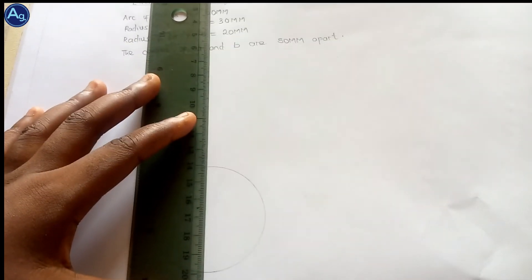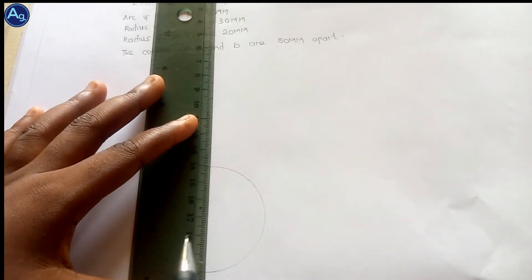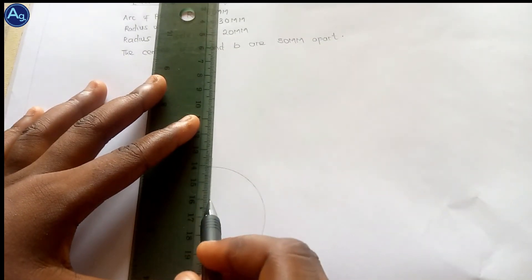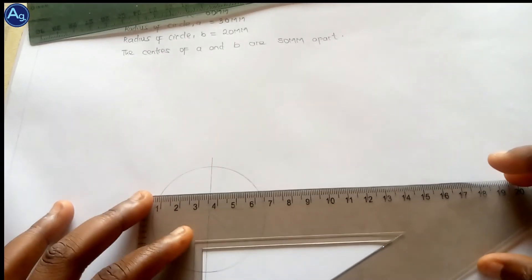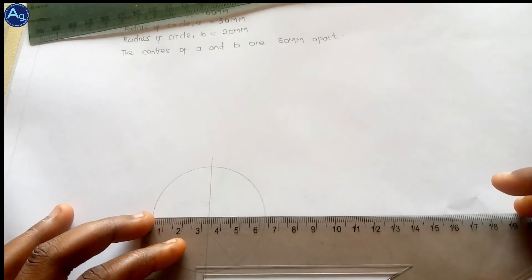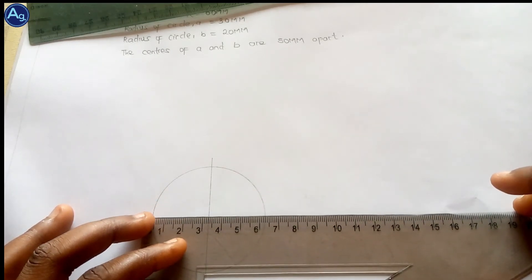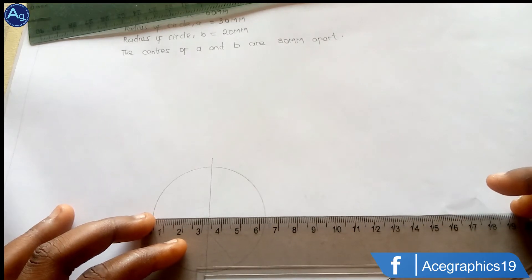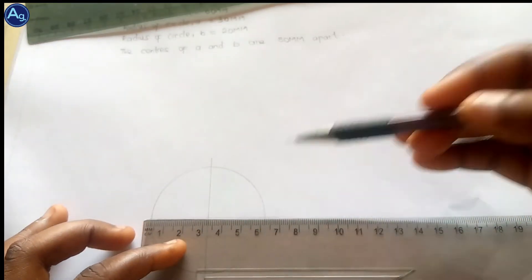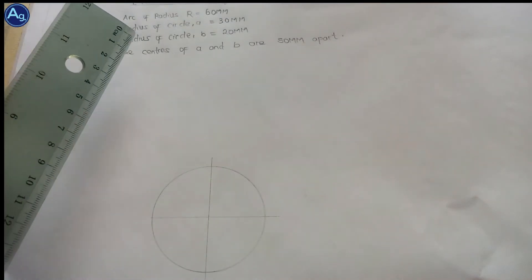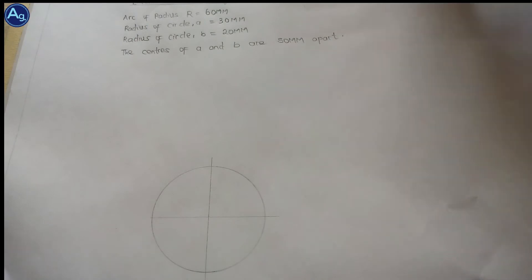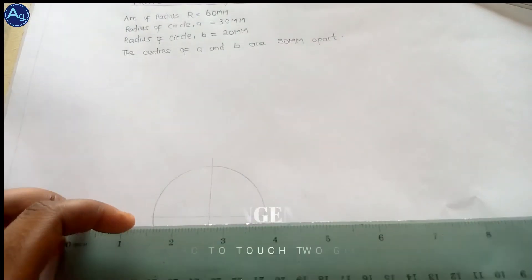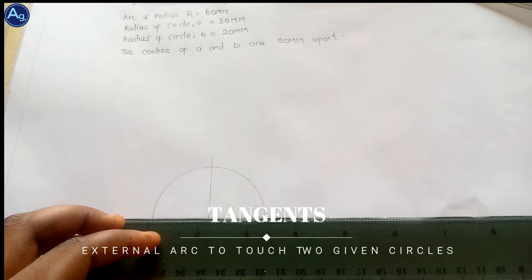Draw the intersecting lines as usual — first the horizontal line of intersection, then the second line of intersection. We're told that the centers of A and B are 15 mm apart, so we'll extend this horizontal line of intersection accordingly.